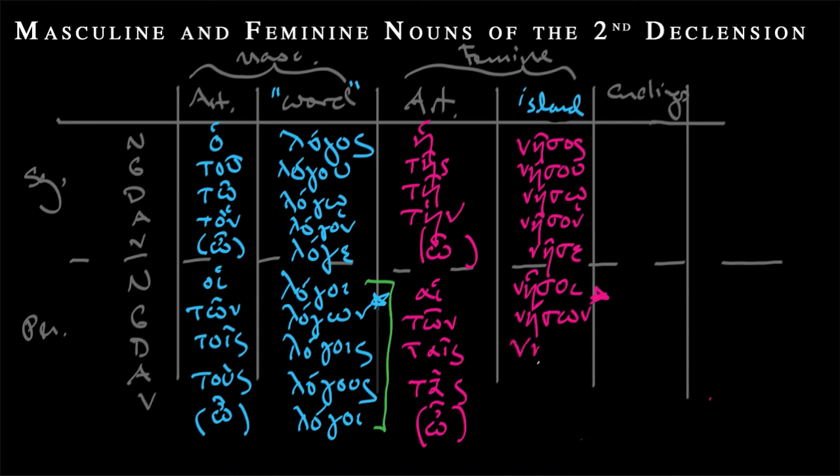So now we get into tais nesois. This is a diphthong but it's protected by that s, so that stays long, acute accent. And then same, tas nesous, long, so that stays an acute. And then as always, nominative and vocative plural forms are identical, so nesos.